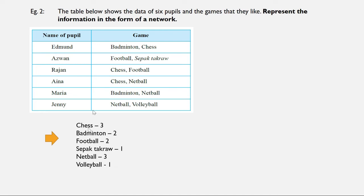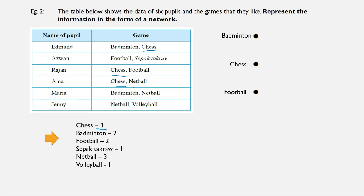To represent it in the form of a network, I'm going to choose the one with the highest popularity, which is chess — or netball, it's up to you. Chess has three edges. First, I draw a dot labelled chess. Chess comes with badminton, so a second dot represents badminton. Then chess comes together with football, and the next one is netball. I'm going to connect all three using lines to represent the edges.